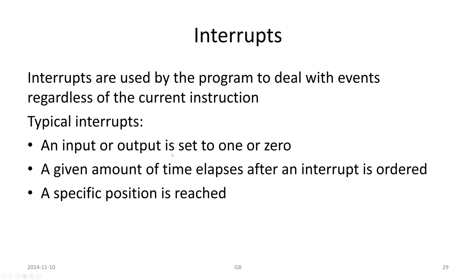We have interrupts. They are used by the program to deal with events regardless of the current tool instruction. Typical interrupts are: an input or output is set to 1 or 0, a given amount of time elapses after an interrupt is ordered, or a specific position is reached. If these kind of things happen then maybe we want to have an interrupt. The robot should do something else.